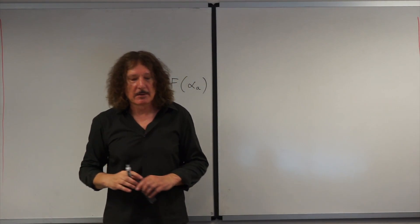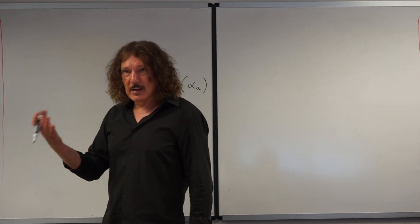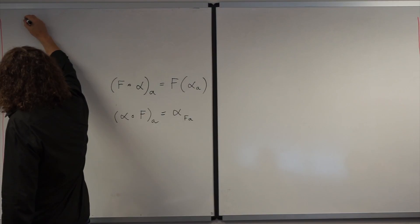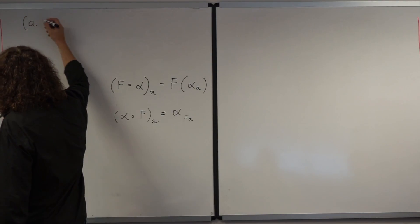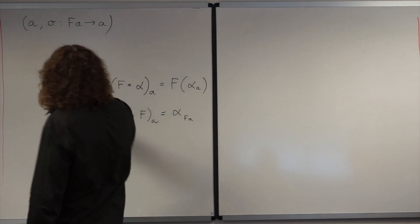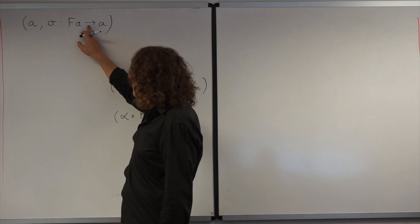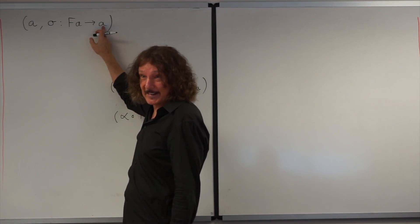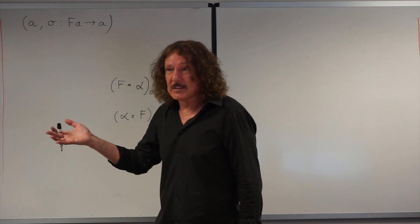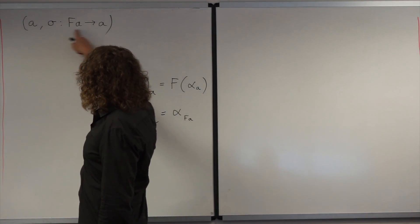Now let's go back to what we were talking about last time: monad algebras. In general, for every endofunctor we have a category of algebras for this functor. The category of algebras consists of pairs where we pick an object — called a carrier — and a morphism that goes from F(A) to A. It has to be an endofunctor because F(A) has to be in the same category as A.